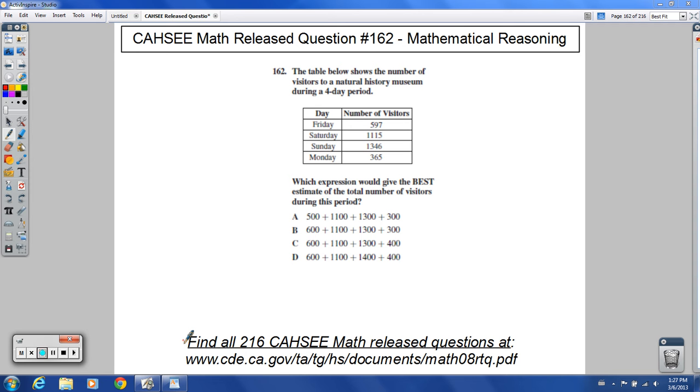Welcome to Release Question 162 for CAHSEE Math. The table below shows the number of visitors to a natural history museum during a four-day period.